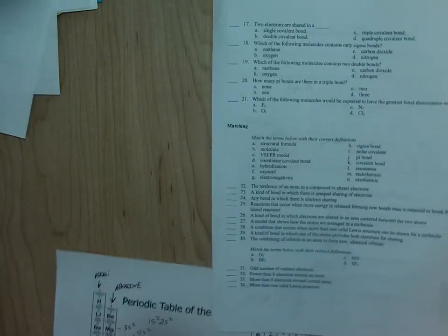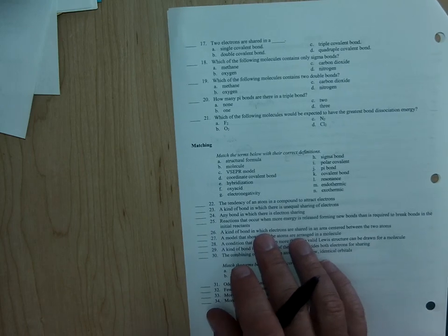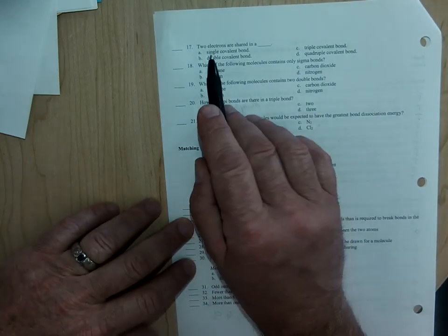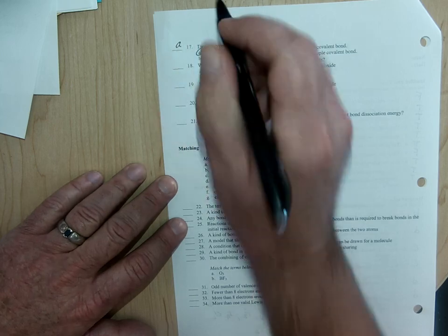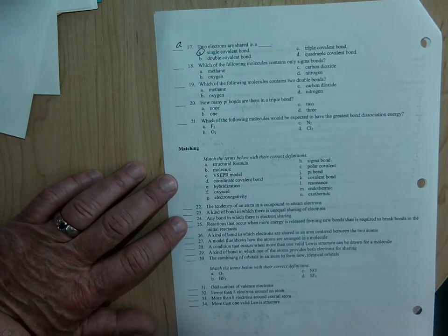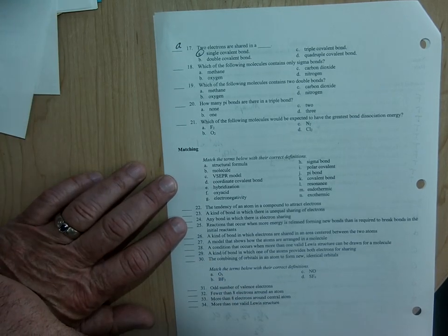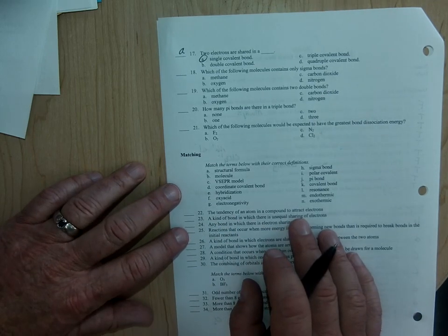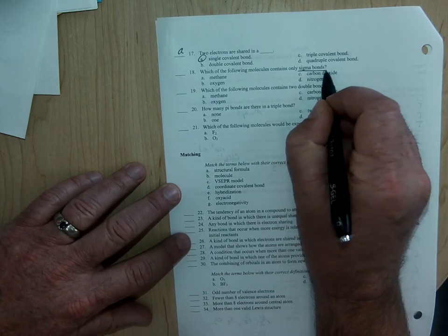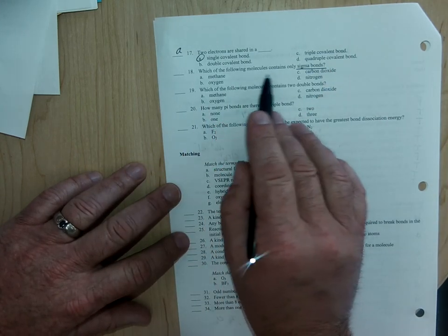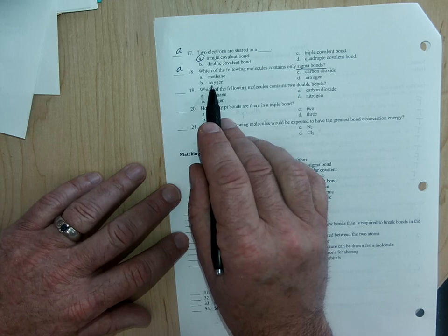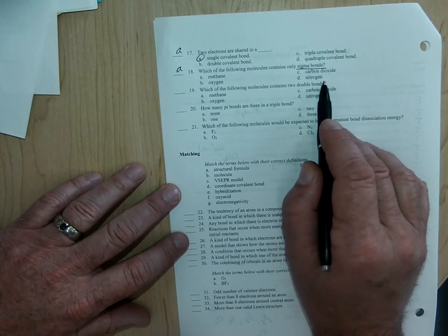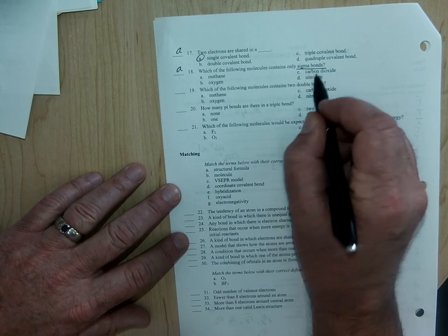So now, like Bob Seger, turn the page. And number 17, two electrons are shared in a single covalent bond. And you can see how, in a future quiz, I could say, four electrons are shared in a double covalent bond. Six electrons are shared in a triple covalent bond. Which of the following molecules contains only sigma bonds? Sigma bonds, the other way to think of sigma is single bonds. So the molecule that only contains sigma bonds is methane, because oxygen has a double bond, which would be a sigma bond and a pi bond.